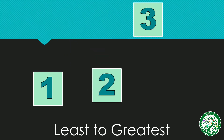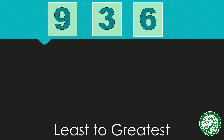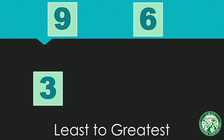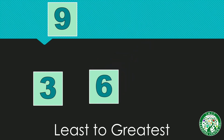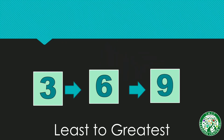Then the last one, we have number three. So another example — we have here numbers nine, three, and six. Which do you think is the least number? Number three. How about the next one? Number six. How about the last one? We have number nine. So our answer is three, six, and nine.